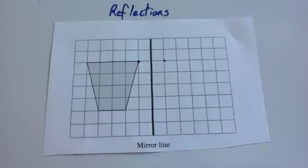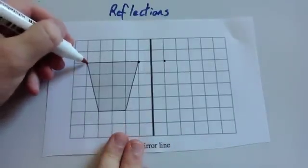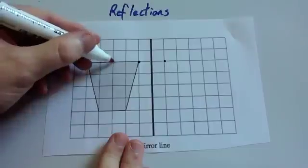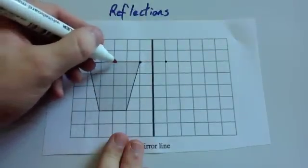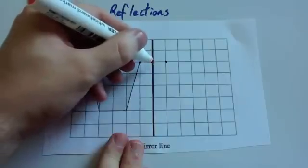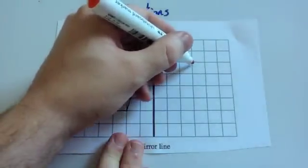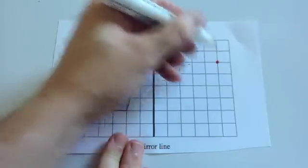Let's look at another point. So let's look at this point up here. So to get to the mirror line, you'd go 1, 2, 3, 4, 5. Let's check. 1, 2, 3, 4, 5. So you're going to go to number 5. 1, 2, 3, 4, 5. So that's where that would go to.